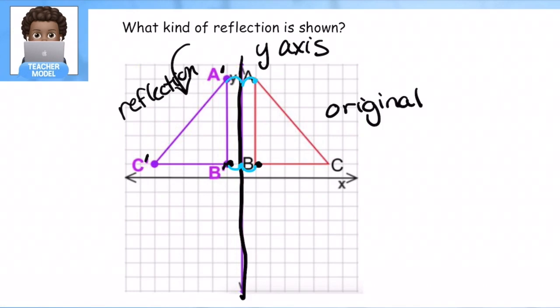Same thing with A and A prime. They're both one away. And C and C prime are one, two, three, four, five. These are six away from the mirror. And that's another way of noticing where the mirror is. It was halfway between the two closest points. It was in the middle of our two closest points.